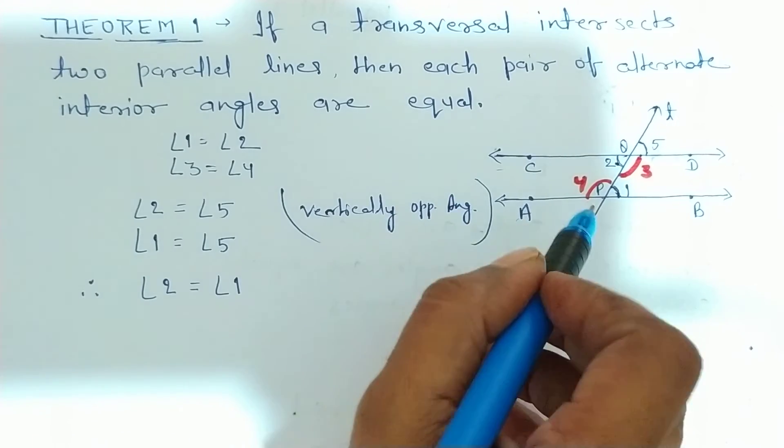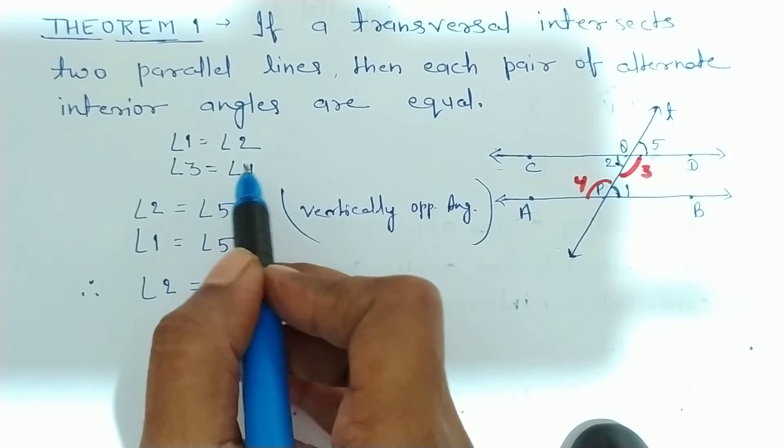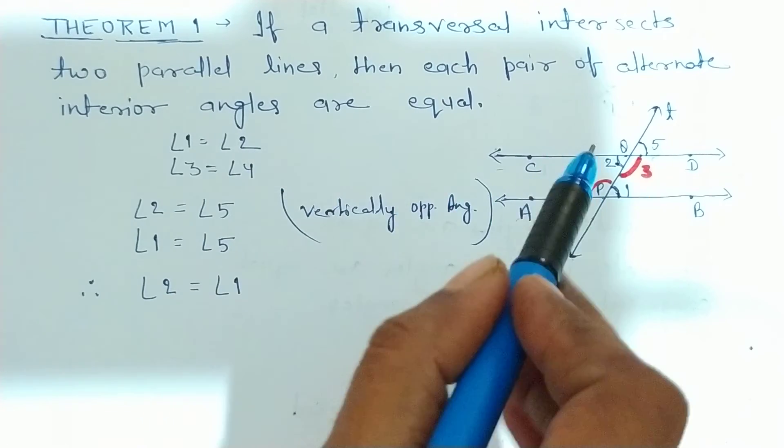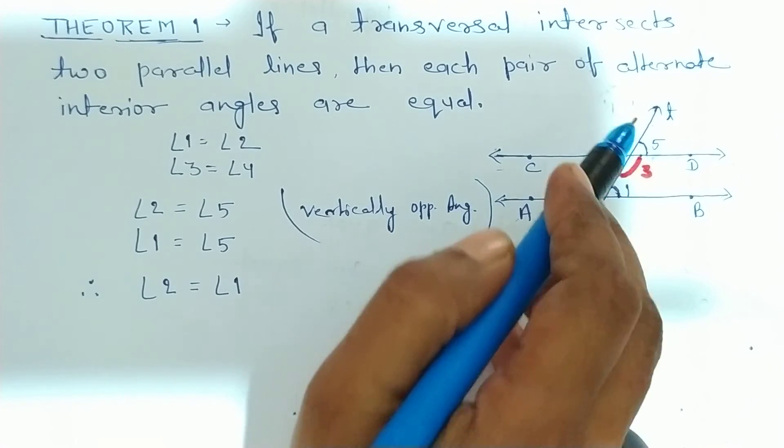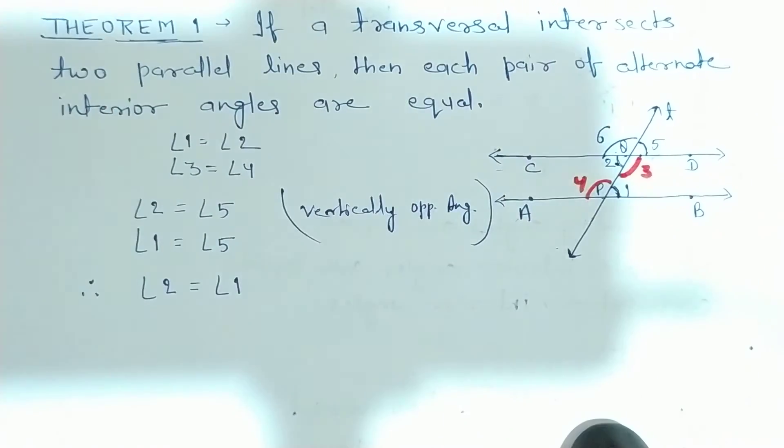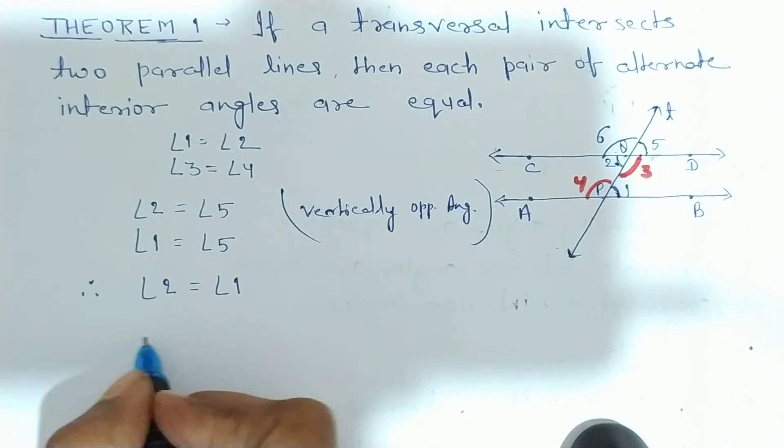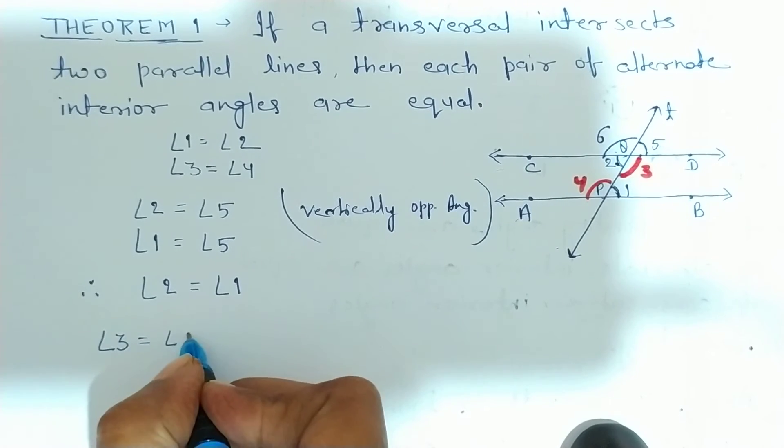Similarly, aap isme dekh sakte ho, humein 3 aur 4 ko bhi equal proof karna hai. To, jaise humne upar kiya, angle 3 equal to angle 4 humein proof karna hai, but you know that angle 3 equal to angle 6. Ise hum kar lete hain 6. Theek hai? Angle 3, you can write here angle 3 equal to angle 6.